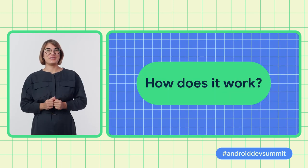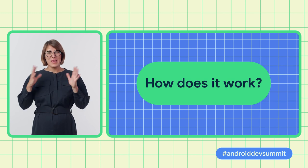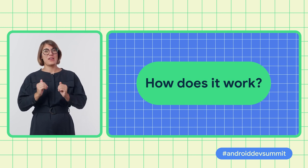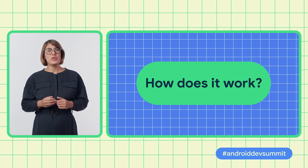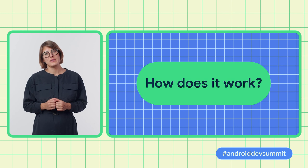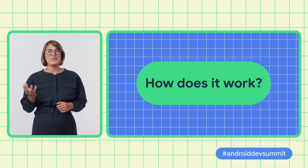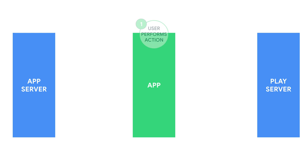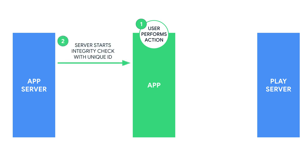So how does it work? The API allows your app server to communicate with Play servers to determine trust in a way that cannot be interfered with. Let's look at the main steps together. First, the user tries to do something like signing in to your app or joining your multiplayer game. At this moment, your backend server starts an integrity check with a unique ID. Then, your app makes a call to the Play Integrity API.